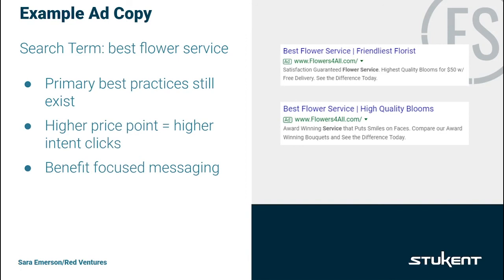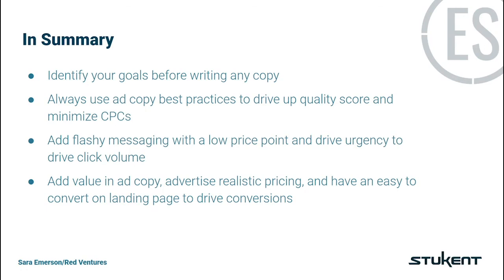To tie everything together — make sure that you know what your primary objective is before you write any ad copy. Always use best practices when writing your ad copy to ensure that your cost per click is as low as possible. When aiming for high click volume, utilize flashy messaging and low price points to drive urgency. And lastly, when striving for users that are likely to convert, focus on the benefits of your product or service, advertise realistic pricing, and use the most transactional landing page possible. All of this together will ensure that you have the most successful search marketing campaign.